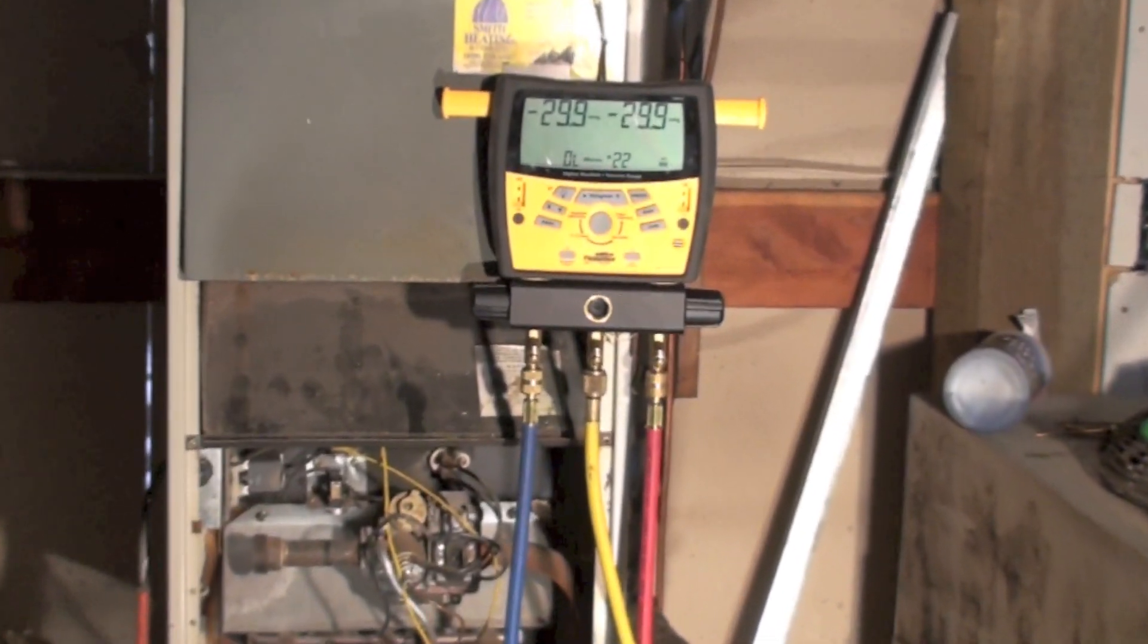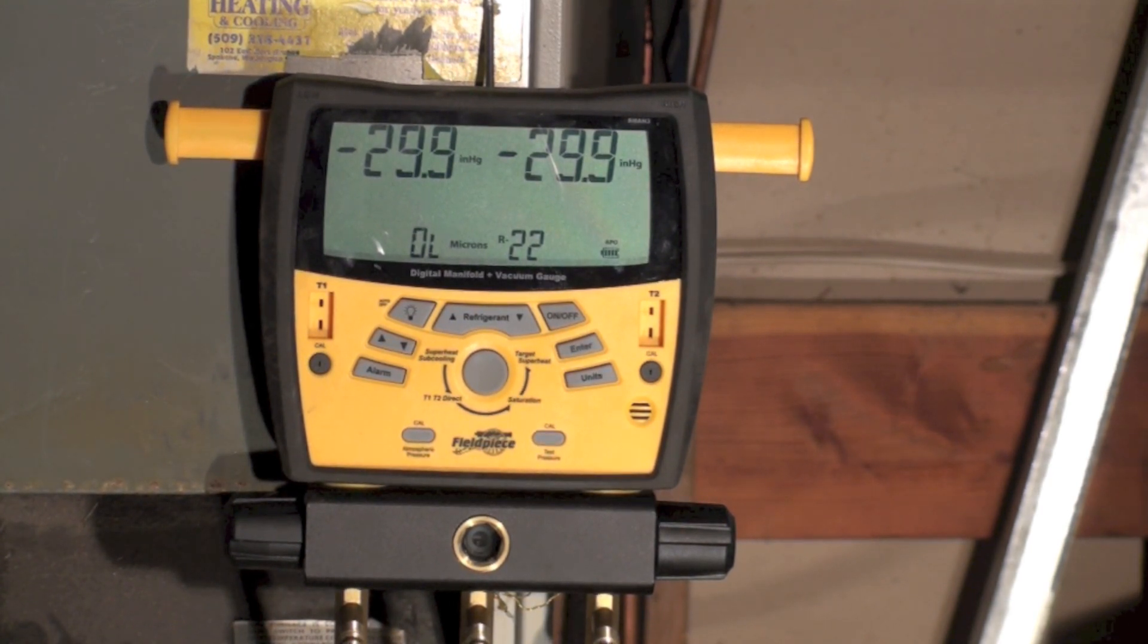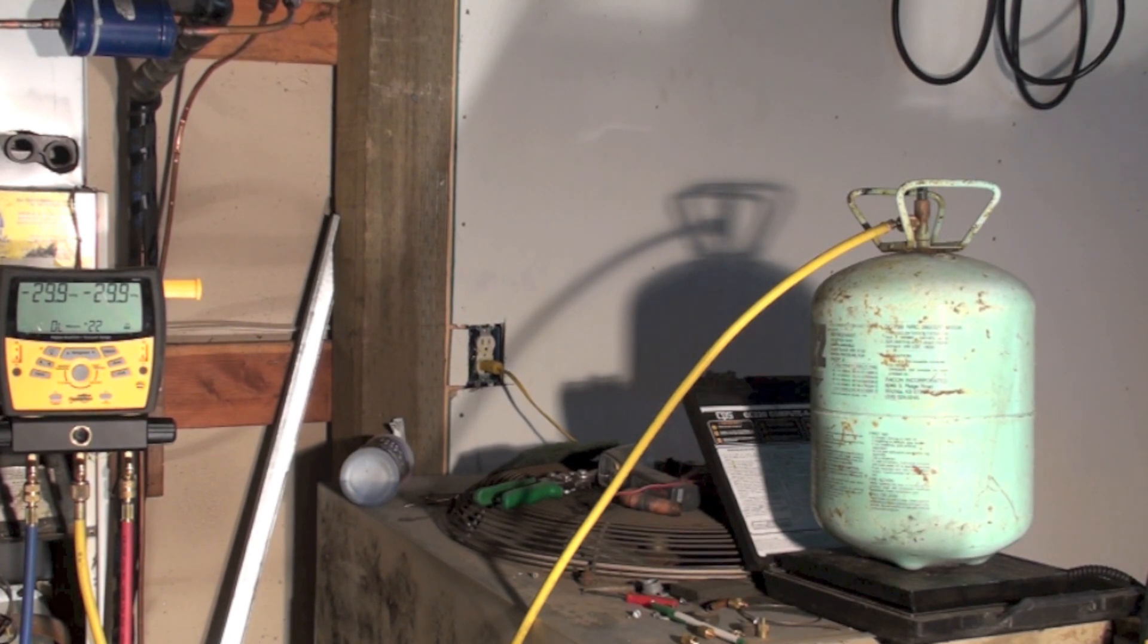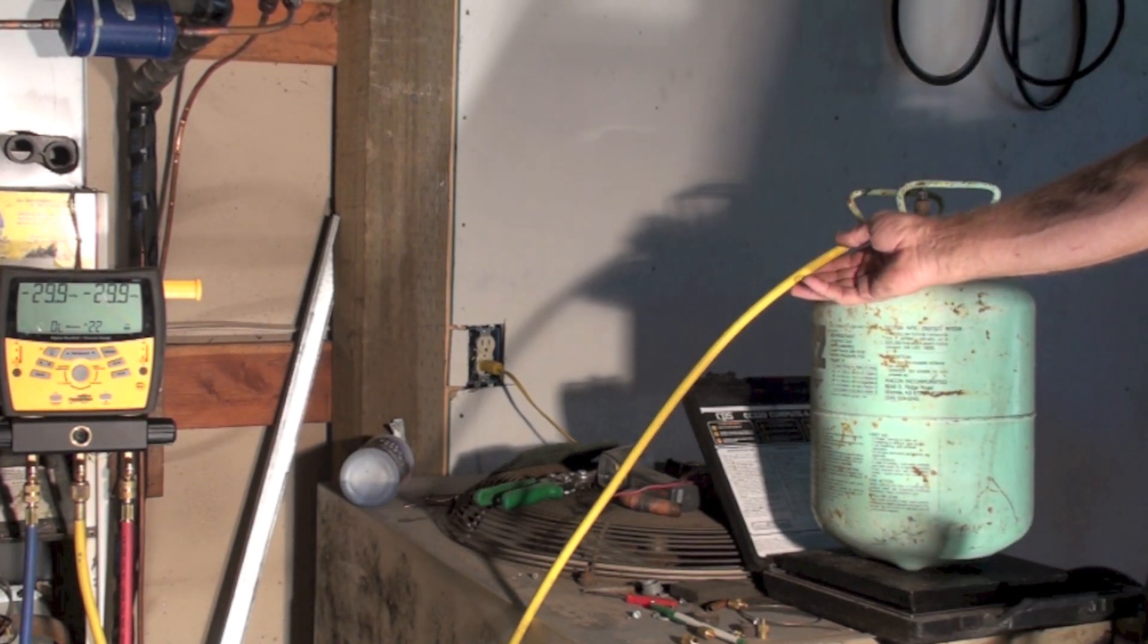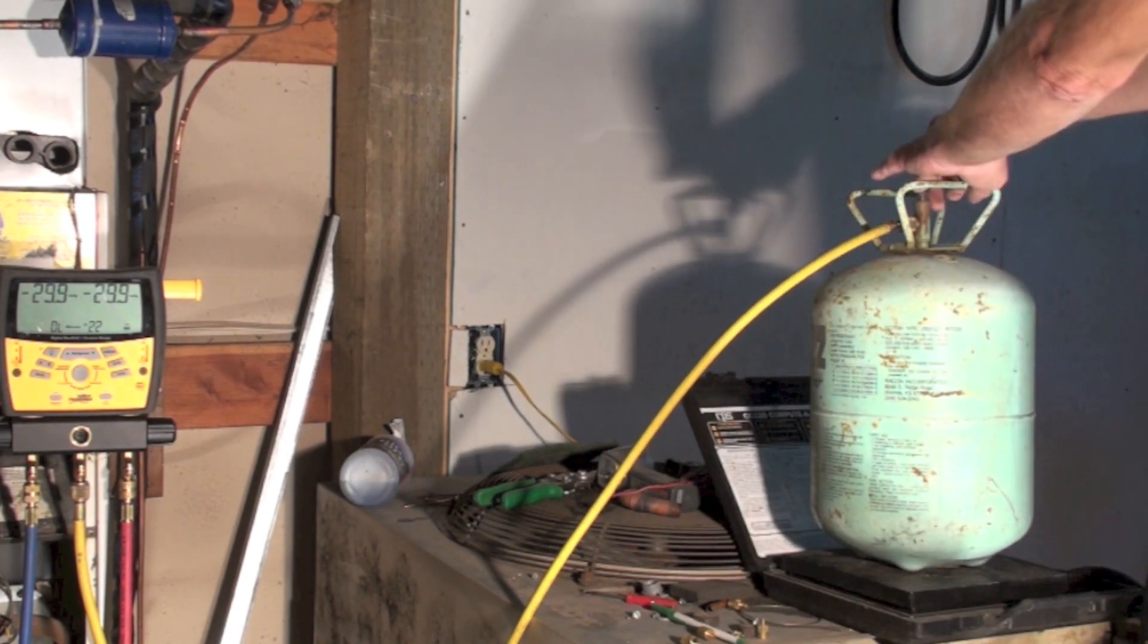And you can see the gauge set is showing 29.9 on both sides. Now, first thing I'm going to do is this yellow hose was just hooked up. There's air in the hose. So I'm going to turn on the refrigerant.